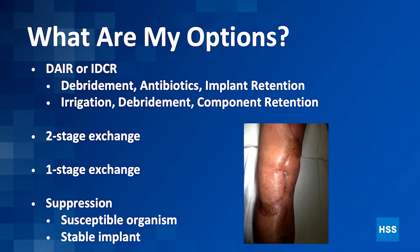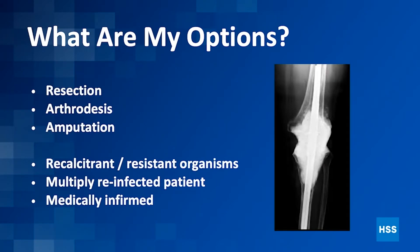What are your options once it's diagnosed? You've got a couple things you can do. You can do a debridement with antibiotics and implant retention, also called an IND with component retention, a two-stage exchange, a one-stage exchange, or suppression if it's a susceptible organism — maybe not even going to the operating room with a stable implant. That's a rare situation. Other more unique situations are resection completely, arthrodesis, amputation. These are in cases with recalcitrant or resistant organisms, multiple infected cases, and patients who can't even tolerate going to the operating room. So those are all the options, and we're going to specifically talk about IND with component retention.